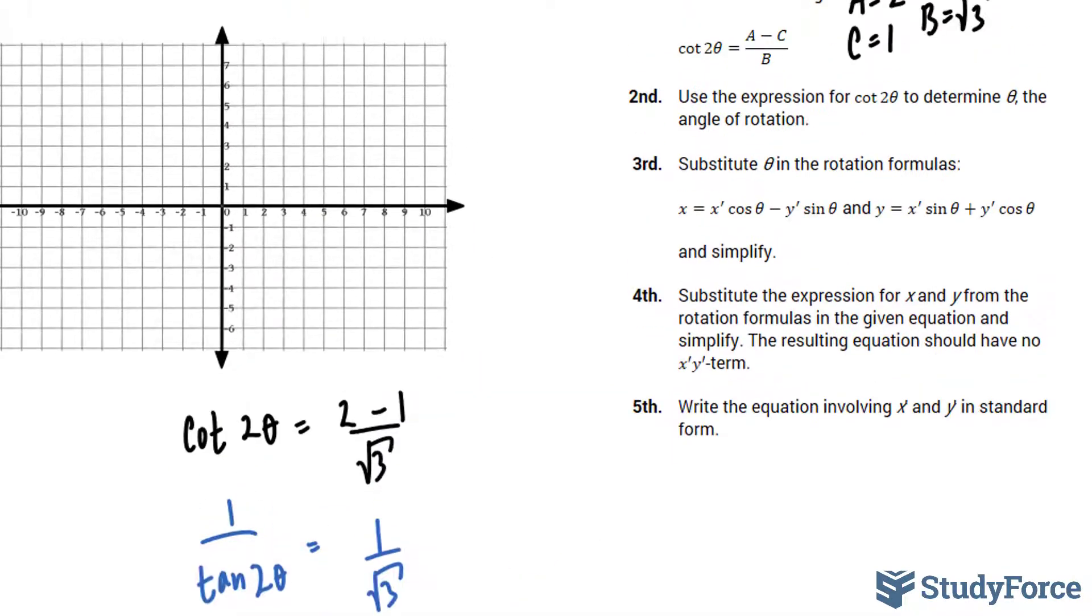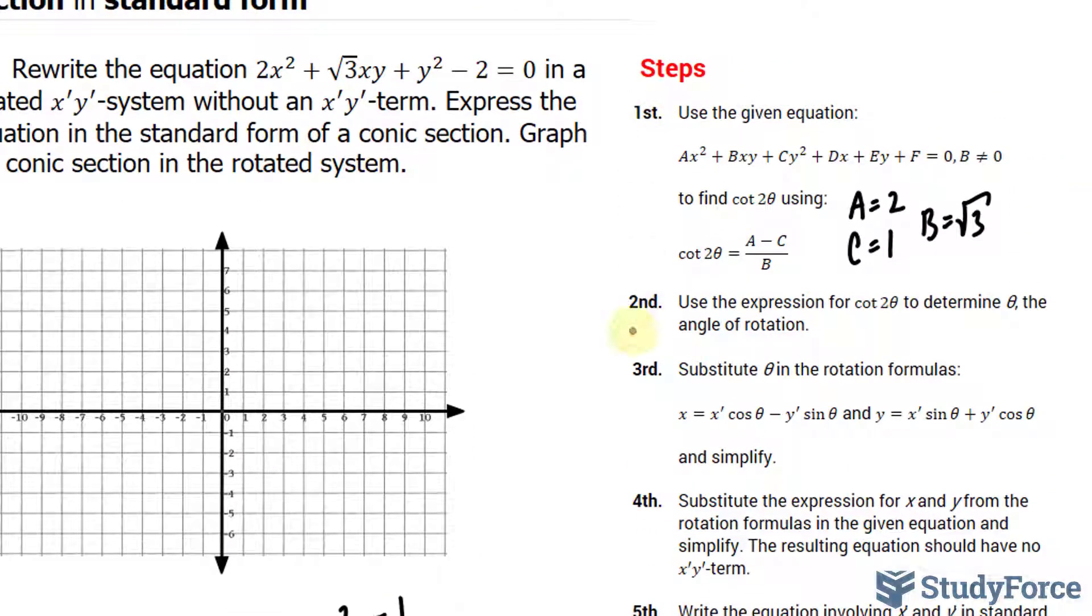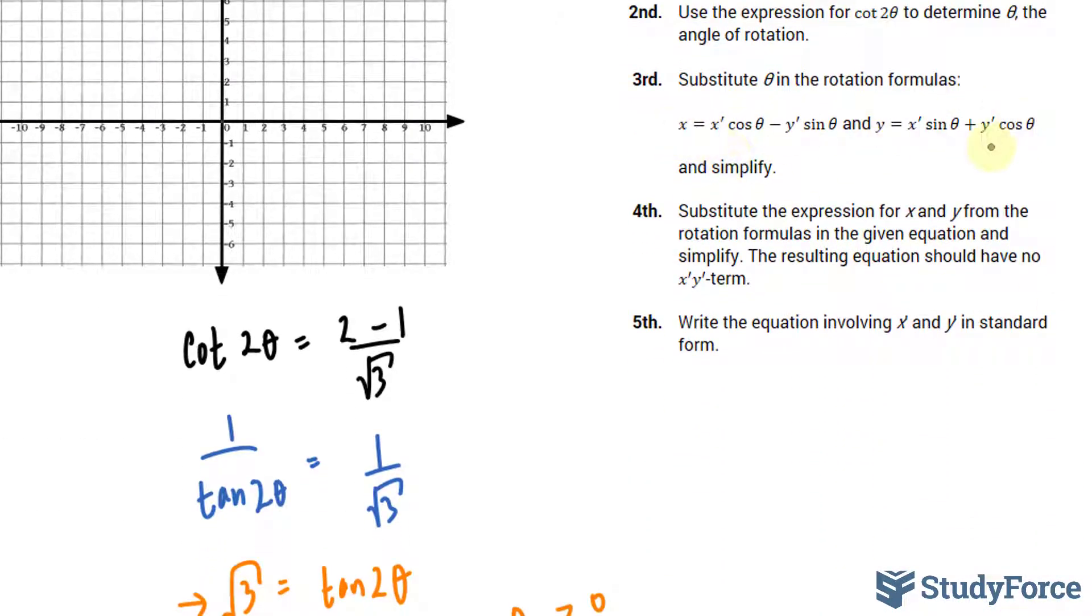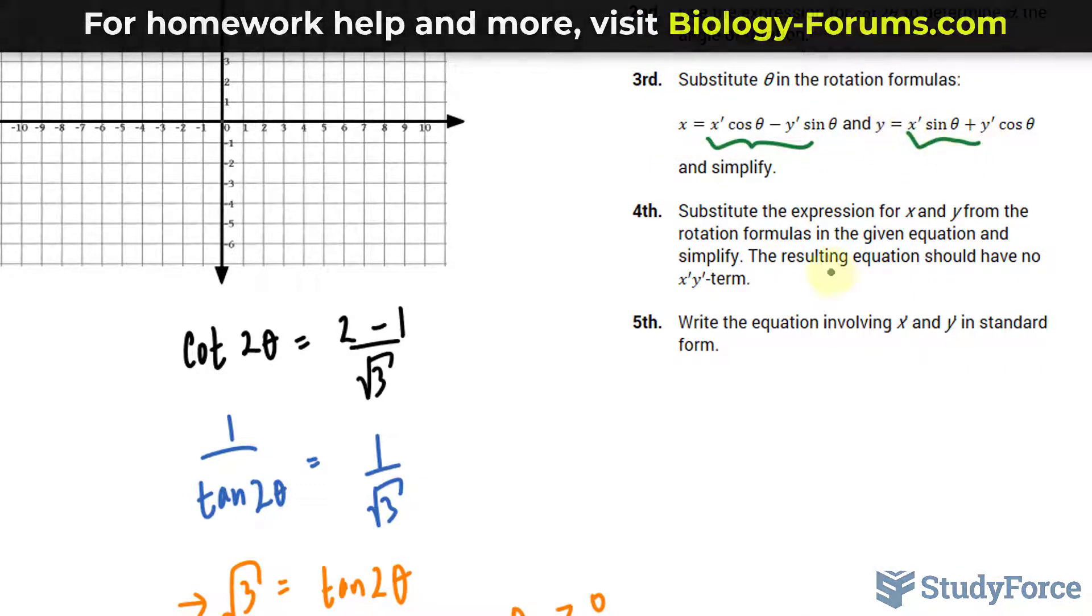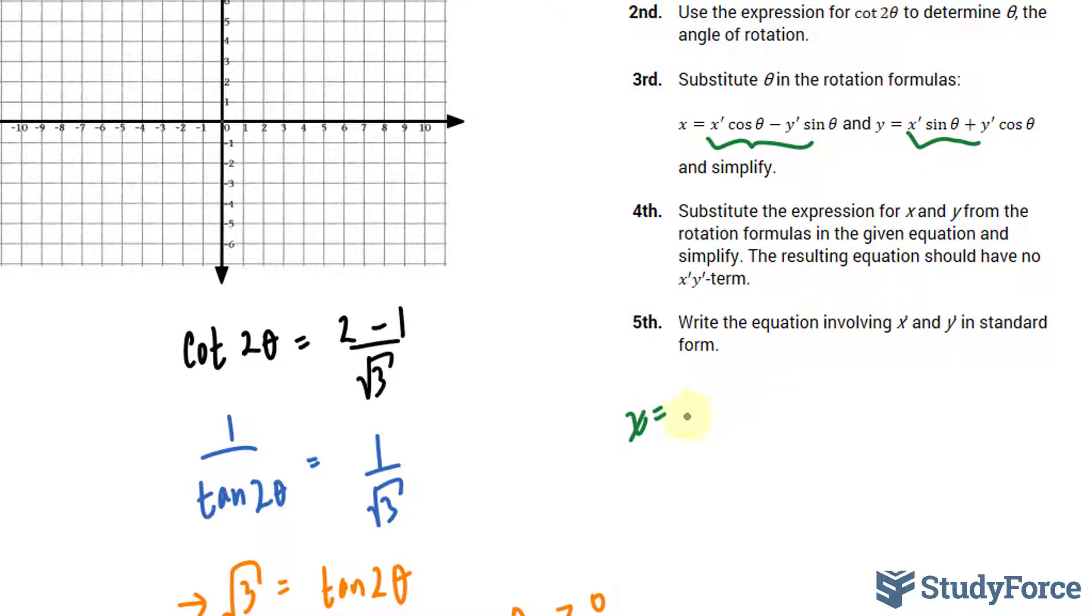Now that we found our angle, we've actually accomplished both steps 1 and step 2. In step 3, we're told to substitute theta in the rotation formulas. And we have two rotation formulas. They're right here. So let's go ahead and find out what we should replace x and y with. And it will be these two expressions. So we have x is equal to x prime cosine at 30 degrees minus y prime sine at 30 degrees. y is equal to x prime sine at 30 plus y prime cosine at 30.